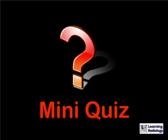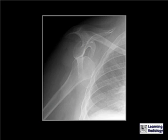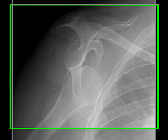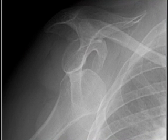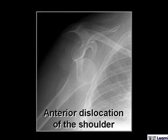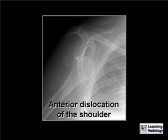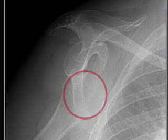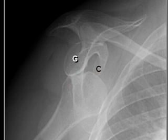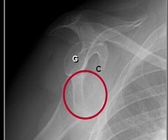Here is your mini quiz. You can pause your player to decide what kind of shoulder dislocation this represents. This is an anterior dislocation of the shoulder. We can see that the humeral head lies under the coracoid process, medial and inferior to the glenoid — the typical location for an anterior or subcoracoid dislocation.